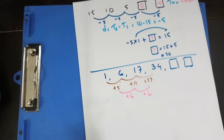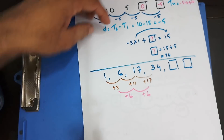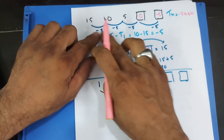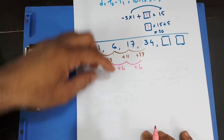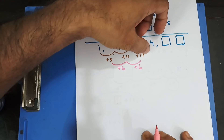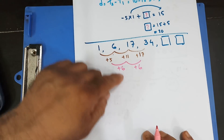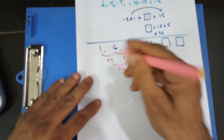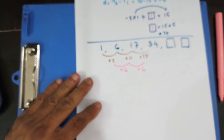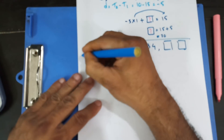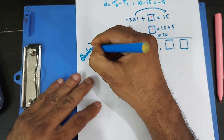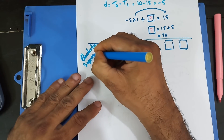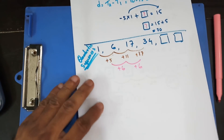So the first line doesn't have a common difference, but the second line does — the common difference is 6. This type of sequence, we call it a quadratic sequence.